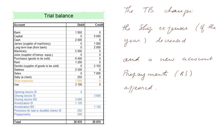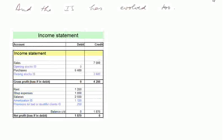So the new trial balance has changed. The shop expenses of the year are now really 1,000. And there's a new account, prepayments, with 500. Everything is balanced again, but the prepayments will end up as temporary assets in the balance sheet. The income statement has also evolved. The trading account doesn't change, but shop expenses is now 1,000 — the real charges of the year. And the net loss has decreased.